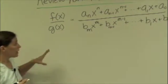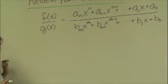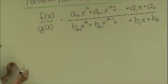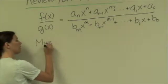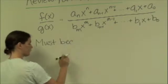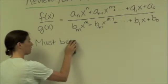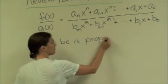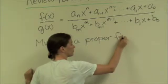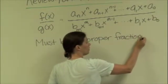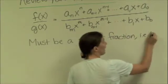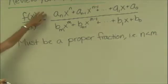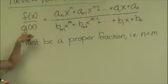The constraint for using the method of partial fractions is that this ratio must be a proper fraction. A proper fraction, or in other words, n must be strictly less than m. So the degree of f has to be strictly less than the degree of g.